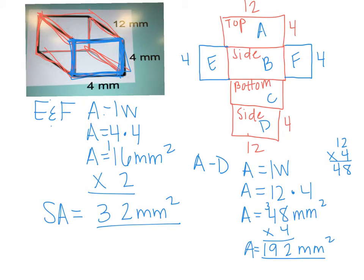So I underlined our two final areas of 32 millimeters squared and 192 millimeters squared so I can keep track of those two.